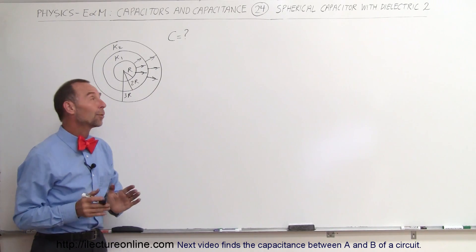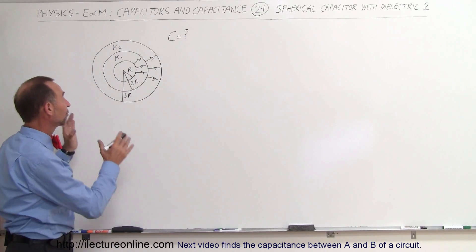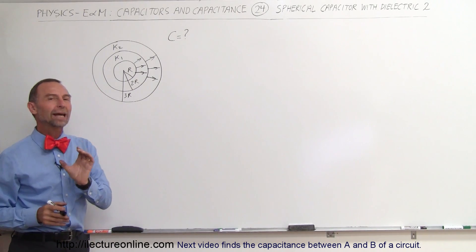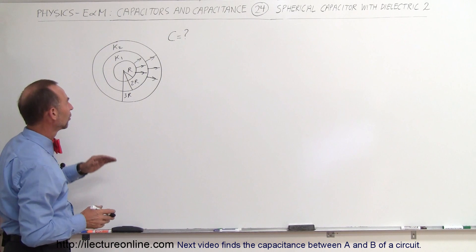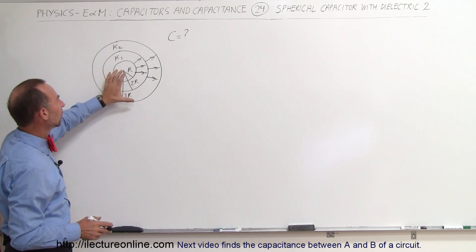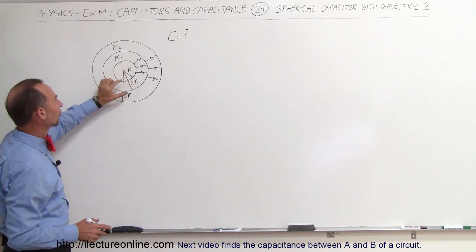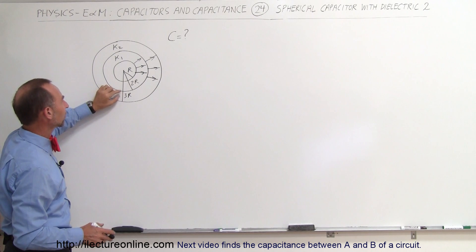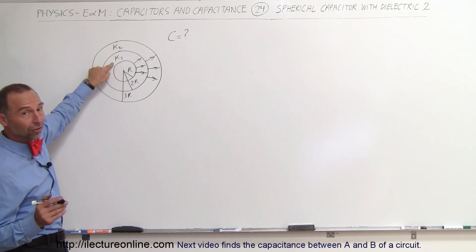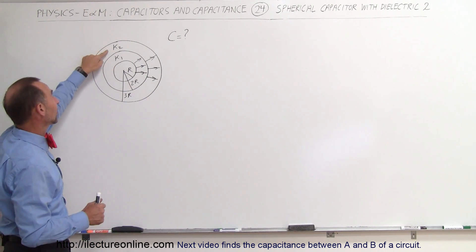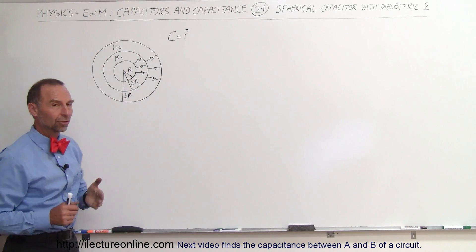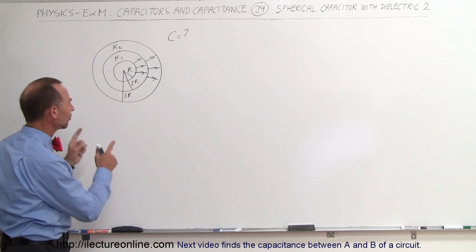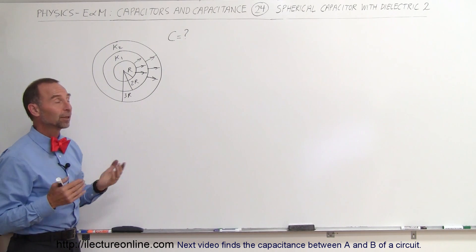Welcome to ElectronLine. We're going to take a look at a spherical capacitor that has two dielectrics. The inner radius is R, the outer radius is 3R, and we have two layers of dielectric: the first one with dielectric constant K1, the second one with dielectric constant K2. What is the capacitance of this capacitor?